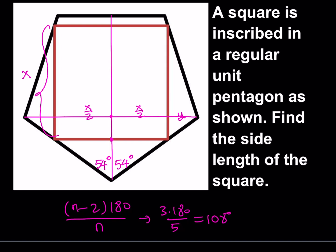Obviously that gives us a right triangle, so this is going to be a 36-degree angle here, and this is going to be a 36-degree angle over here, because this is also a right triangle and we have some similarities.